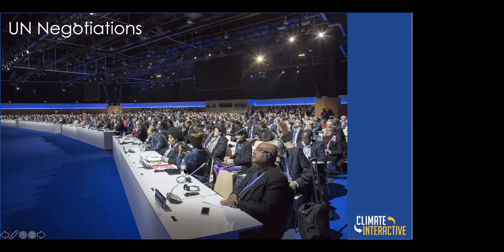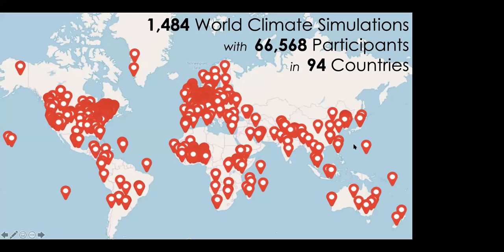We also call this a simulation for another reason: the decisions that delegates make are entered into the C-ROADS model — the Climate Rapid Overview and Decision Support model — where their actions are simulated in real time, and you receive feedback on outcomes including impacts on global temperature increase. The map shows some of the places where world climate has been run, with a wide range of audiences from middle schoolers to government leaders. The game has been facilitated over 1,000 times, played by over 60,000 people in 88 countries.